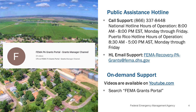For technical assistance with Grants Portal or Grants Manager, you can call the PA Grants Portal Grants Manager Hotline at 866-337-8448. National hours of operation are 8 a.m. to 8 p.m. Eastern, Monday through Friday. In Puerto Rico, hours are 8:30 a.m. to 5 p.m. Atlantic, Monday through Friday. The hotline can also be reached by email at fema-recovery-pa-grants@fema.dhs.gov. We have many other recorded webinars and tutorial videos available on our YouTube channel. You can find them by searching for FEMA Grants Portal on YouTube or by navigating to the Support Center in Grants Portal or Grants Manager.